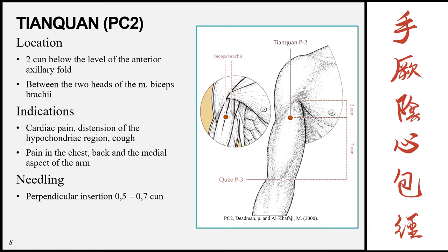Next is Tianquan, pericardium 2. This point is located 2 cun below the level of the anterior axillary fold, between the two heads of the biceps brachii. The indications are cardiac pain, distention of the hypochondriac region, cough, and pain of the chest, back, and medial aspect of the arm. Needling is perpendicular insertion, 0.5 to 0.7 cun.